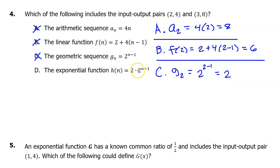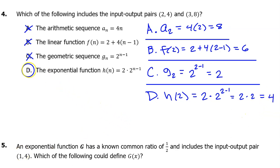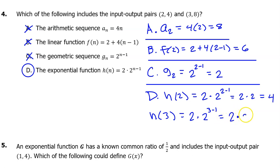Let's evaluate option D at 2 and see if we get 4. H(2) equals 2 times 2 to the (2 minus 1) power, which is 2 times 2 to the 1st, which equals 4. Now let's verify at 3: H(3) equals 2 times 2 to the (3 minus 1) power, which is 2 times 2 squared, which is 2 times 4, which is 8. The answer is D.